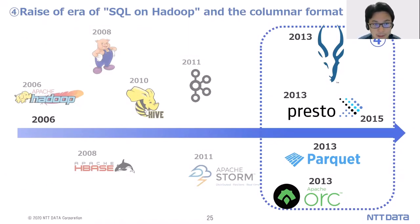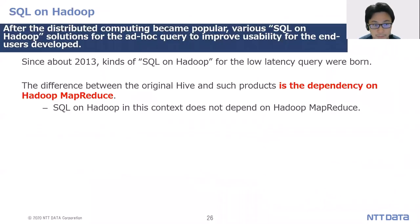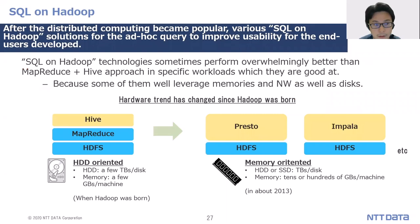The next topic is the rise of SQL-on-Hadoop and columnar formats. After distributed computing became popular, various SQL-on-Hadoop solutions for ad-hoc queries were developed to improve usability for end users. Since about 2013, SQL-on-Hadoop products for low-latency queries were born. The difference from original Hadoop is independence from Hadoop MapReduce. These SQL-on-Hadoop technologies sometimes perform overwhelmingly better than the Hadoop MapReduce combined with Hive approach for specific workloads they are optimized for.